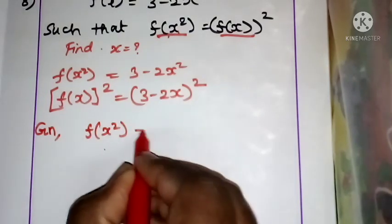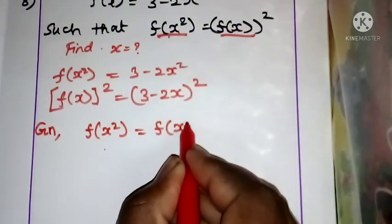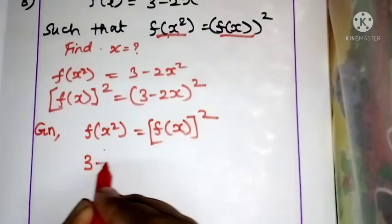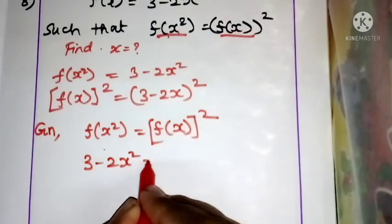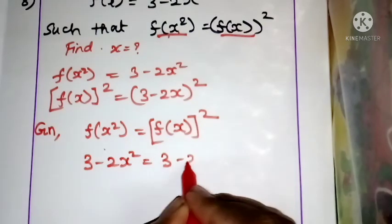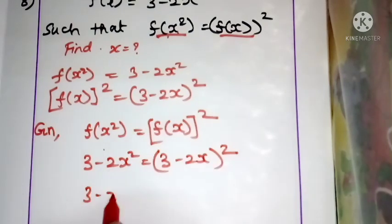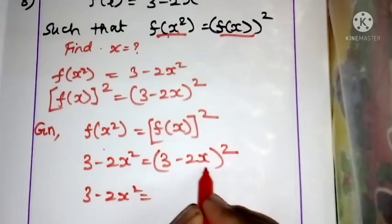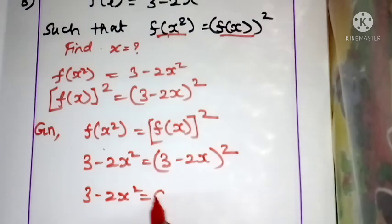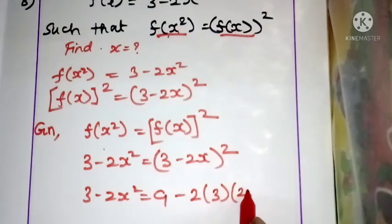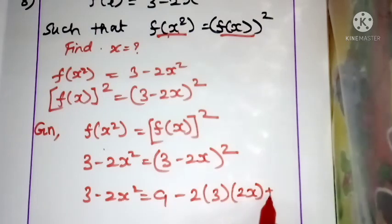x² is equal to f(x²), which equals (3 minus 2x)² expanded using the (a minus b)² formula: a² minus 2ab plus b².